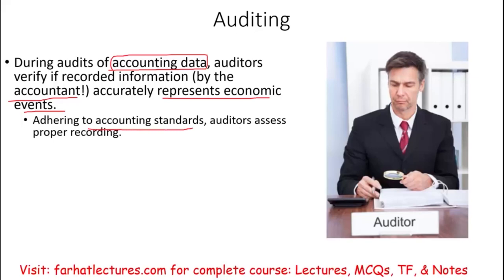Auditors assess whether recording was done properly according to a certain standard. In the U.S., that standard is GAAP — Generally Accepted Accounting Principles. They verify that transactions were indeed recorded properly according to those principles. So auditing is essentially checking the work of the accountant.